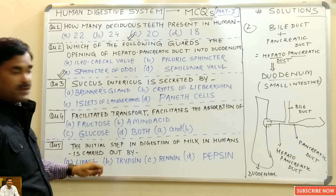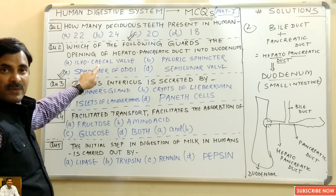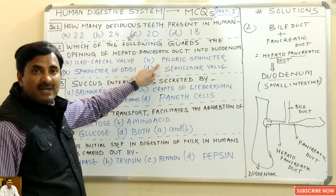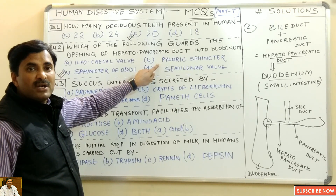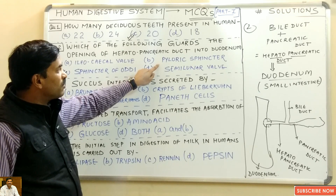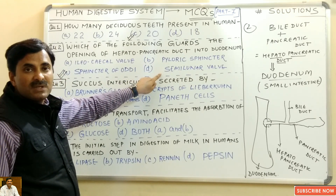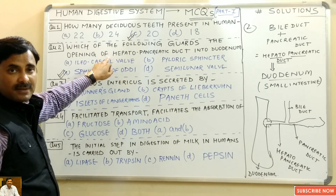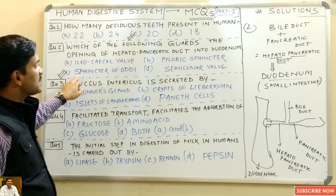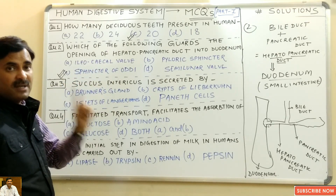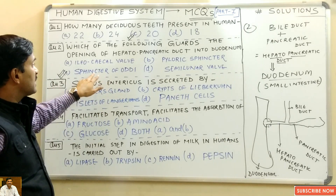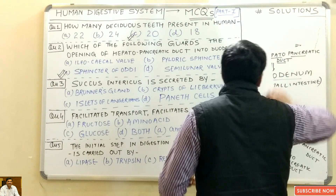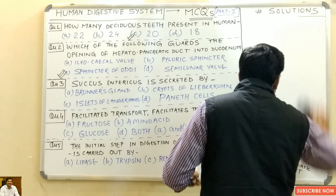The other options: the ileocecal valve is present at the junction of the ileum and cecum. The pyloric sphincter is present at the junction of the stomach and small intestine. Semilunar valves are present in the heart. So the opening of the hepatopancreatic duct into the duodenum is guarded by the sphincter of Oddi — this is asked in medical entrance exams and is given in NCERT.